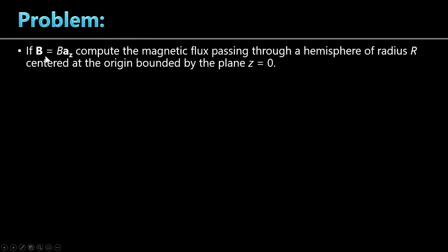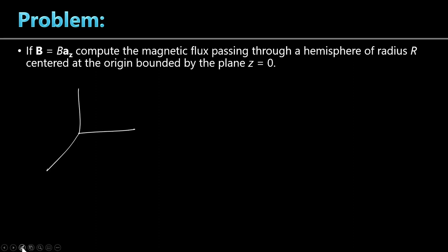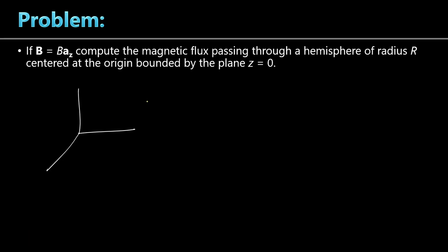Problem 9. We have a magnetic field of magnitude B directed along the positive Z axis. Compute the magnetic flux passing through a hemisphere of radius R, centered at the origin and bounded by the plane z equals 0. We draw X, Y, Z axes, then draw the hemisphere with its base in the XY plane at z equals 0, topped by a dome. The magnetic field points upward along the Z axis.